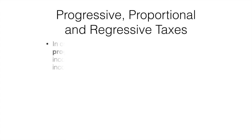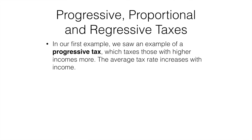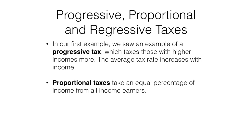What we've just seen is an example of a progressive tax, which taxes those with higher incomes more. As income increases, so does the average rate of taxation. Proportional taxes take an equal percentage of income from all earners. Several US states impose a proportional income tax, including Illinois, Michigan, and Pennsylvania. The US federal tax system is progressive.